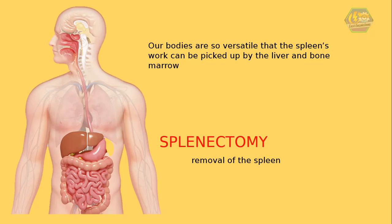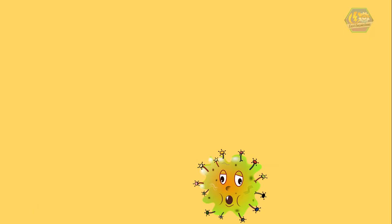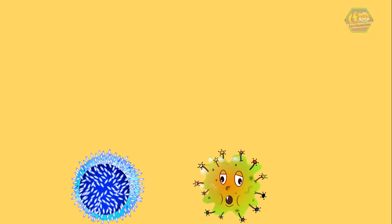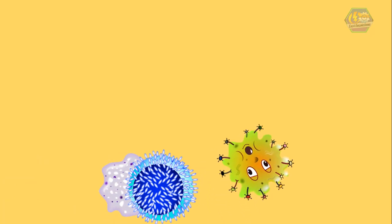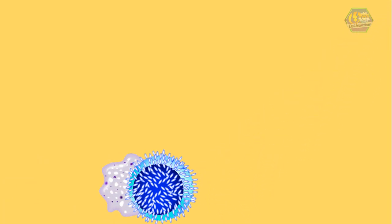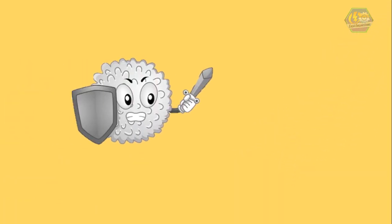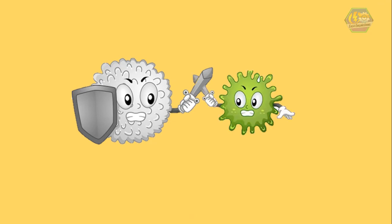Our bodies are so versatile that the spleen's work can be picked up by the liver and bone marrow. But don't be overconfident, because when infections attack, it's going to be a tough one. The spleen also helps get rid of germs — it contains white blood cells called lymphocytes and macrophages. These cells work to attack and destroy germs and remove them from the blood that passes through the spleen. White blood cells are like the police or even the army in your body; they are the real heroes in fighting disease and infections.